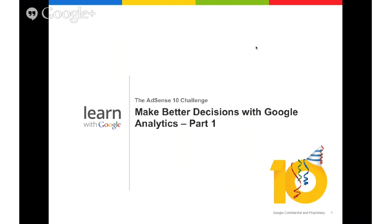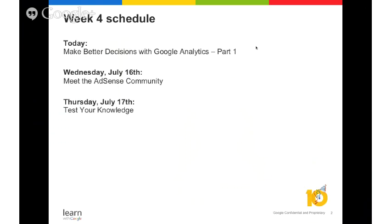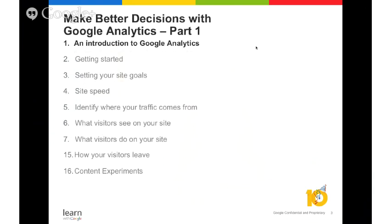Don't forget that the rest of the week is filled with activities designed to reinforce what you learn here today. If you have any questions along the way, ask one another in the Learn with Google for Publishers community and bring your questions to office hours on Friday. Today we'll cover an introduction to Google Analytics, how to set up site goals, how to use Analytics to understand site speed, identify traffic sources, understand visitor behavior, and content experiments.